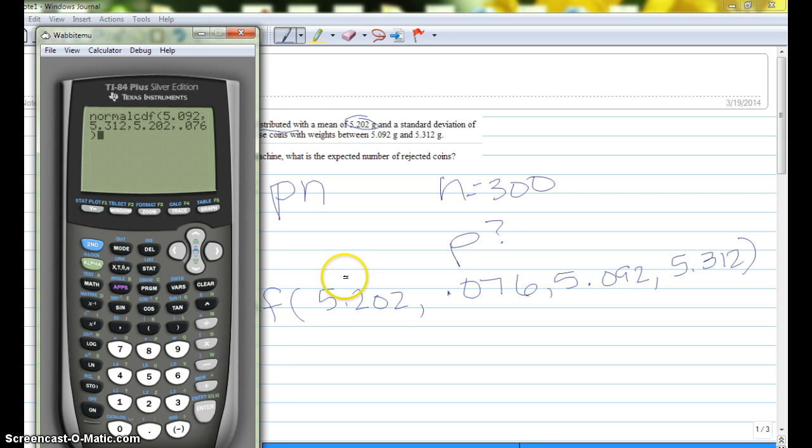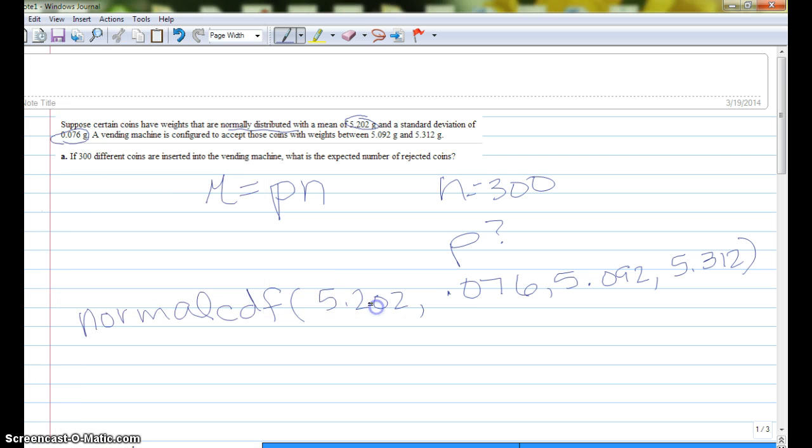Actually, I was thinking of this backwards. If yours doesn't lead you through that screen, you're going to put your lower limit, so 5.092, then your upper limit, 5.312, then your mean, 5.202, then your standard deviation. In that order. And the order does matter.